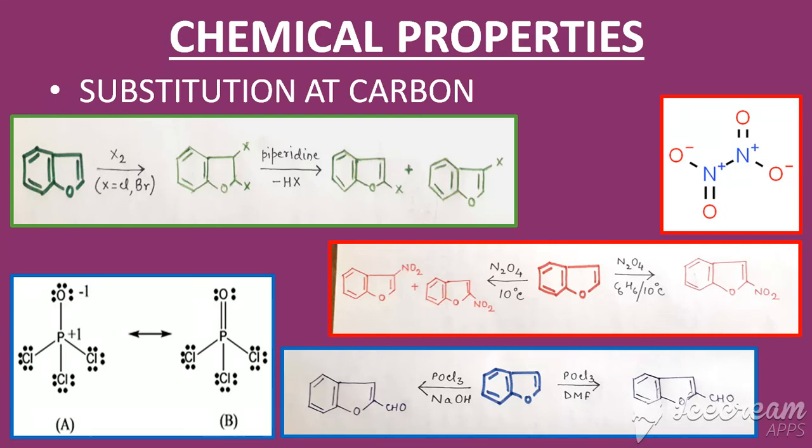So, dinitrogen tetraoxide with benzene at 10 degree centigrade yields 2-nitro derivative but without benzene gives 3-nitrobenzofuran and 2-nitrobenzofuran in the ratio 1 is to 4.